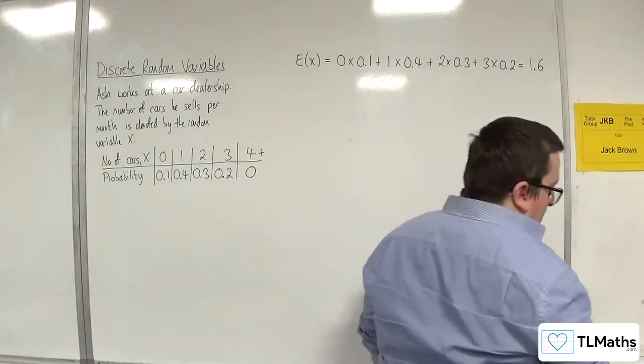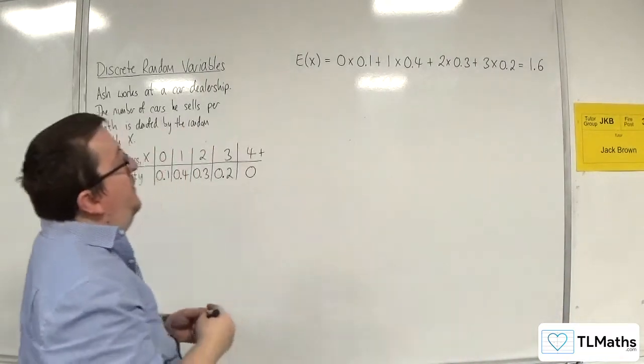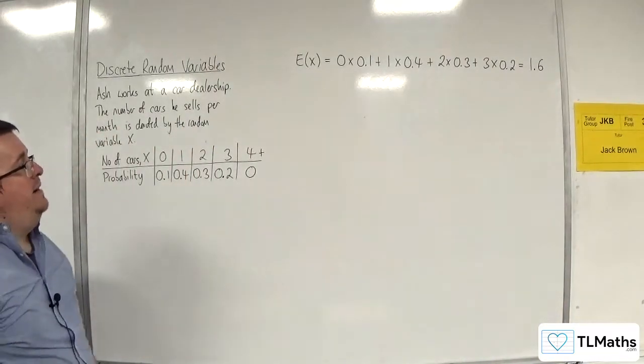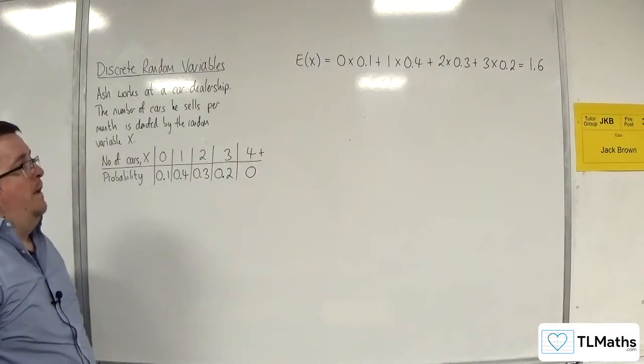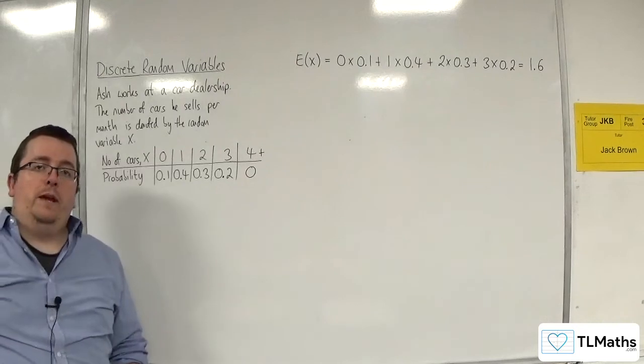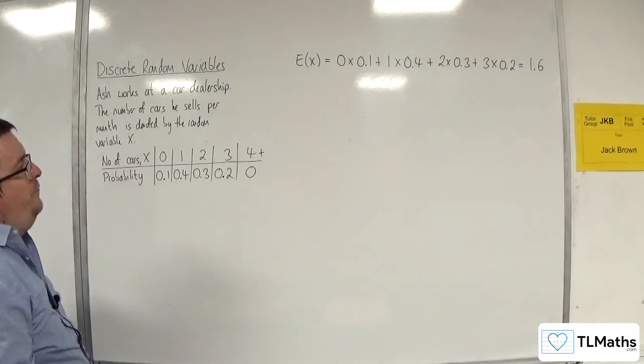OK. So, that's E of X. So, that's essentially the mean number of cars that Ash sells each month.